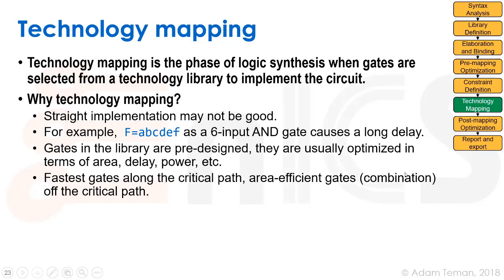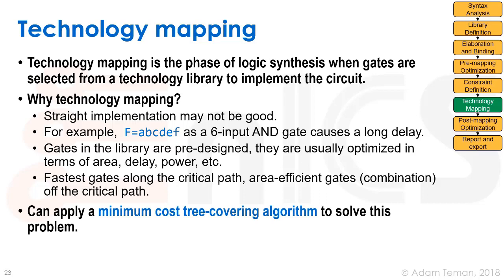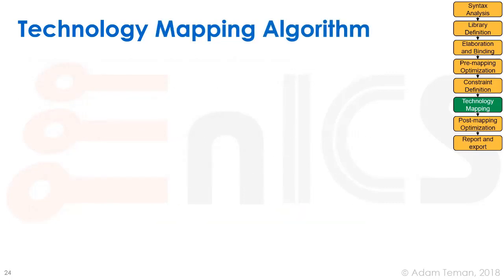The way we do technology mapping is to apply a minimum cost tree covering algorithm. Unlike the heuristics we discussed before that find a good-enough solution, here we apply optimal algorithms that find the best solution under a set of assumptions.